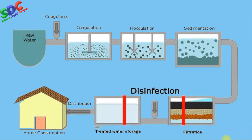We get water through taps — do you know how? There is a water treatment plant. Before water reaches our homes, it is purified by big machines and filters at this plant. The purification involves many steps, and once water is purified, it is collected in big tanks from which it reaches our homes through pipes.